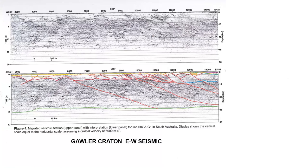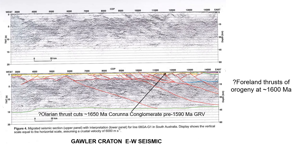Going back to the Gawler Craton, we have an east-west seismic line which very importantly shows a whole lot of east-dipping faults. One of these I believe is the fault that truncates the Kalinjala mylonite zone. Another cuts the Karuna Conglomerate and is in turn overstepped by the Gawler Range Volcanics, constraining its movement to between 1650 and 1590 Ma — in all probability of Olarian age, that 1.6 billion year deformation interval. I would regard these as footwall thrusts of the Olarian Orogeny at about 1600 million years.